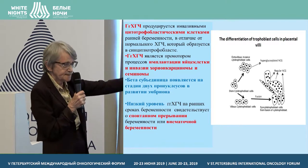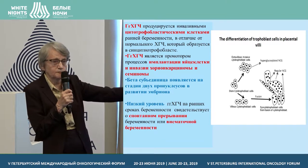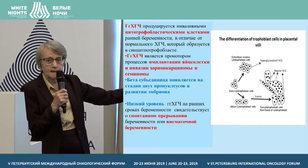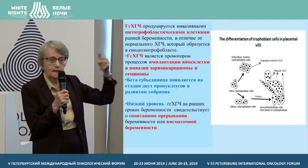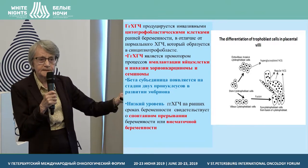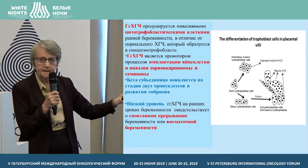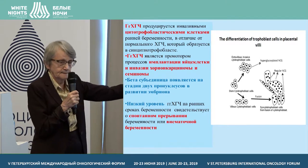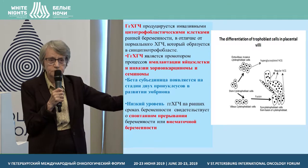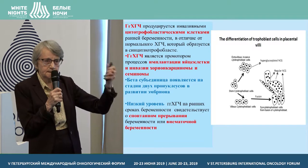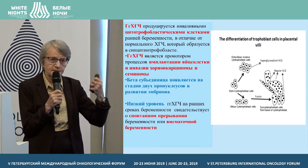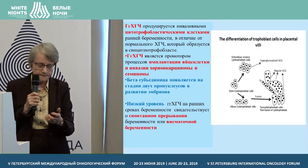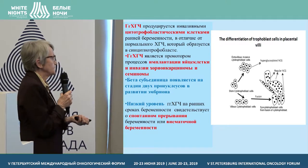On the right, you can see syncytiotrophoblast cells. The cytotrophoblast is predominantly glycosylated forms of chorionic gonadotropin, while syncytiotrophoblasts produce normal, regular chorionic gonadotropin.